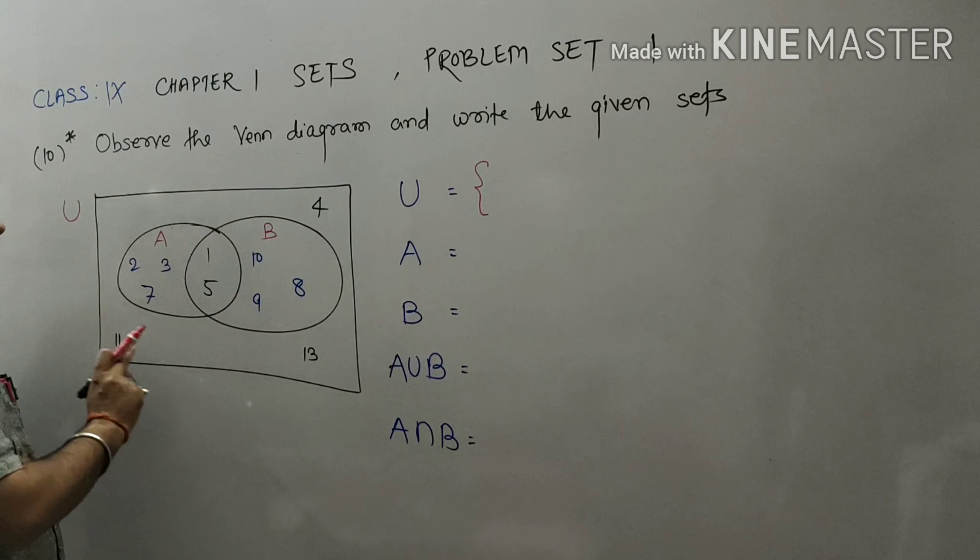Diagrammatic representation of a set, or representation of a set by any closed figure, is called a Venn diagram.